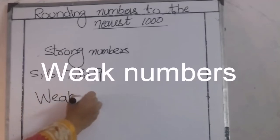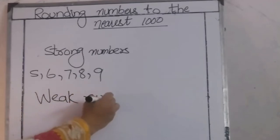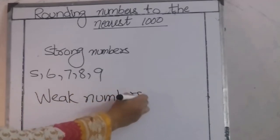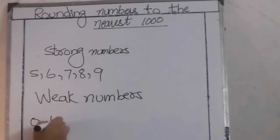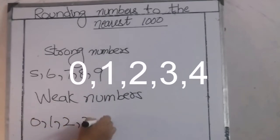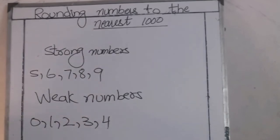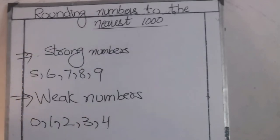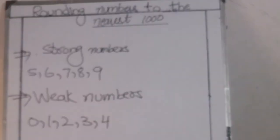Weak numbers — in our previous lesson, we revised these strong and weak numbers also. We know the strong numbers push up the rounded number and weak numbers push down the rounded numbers.